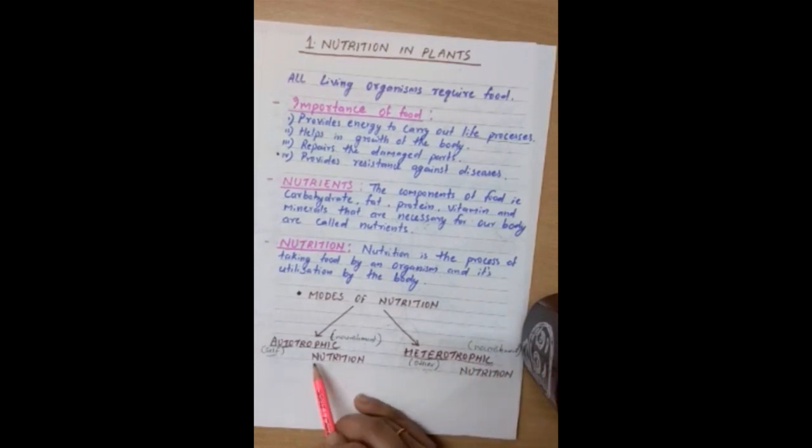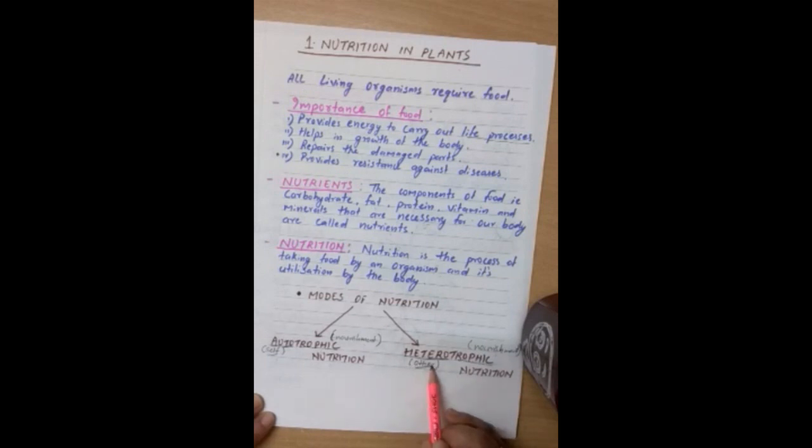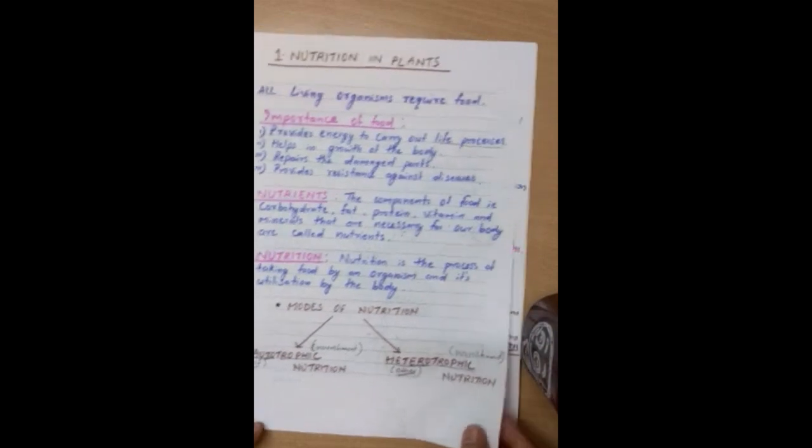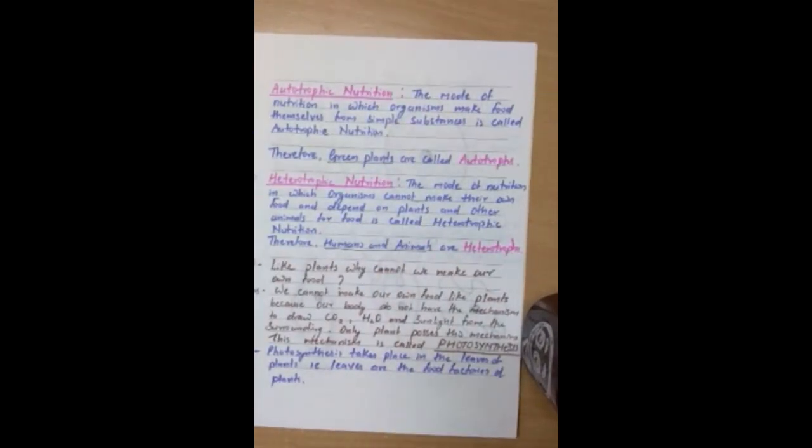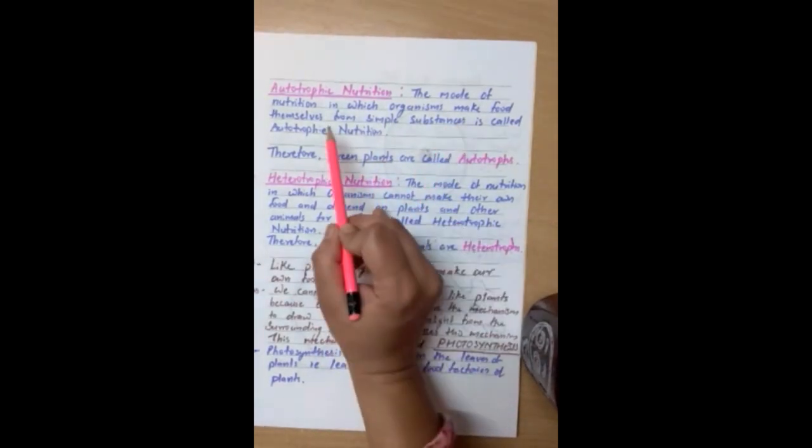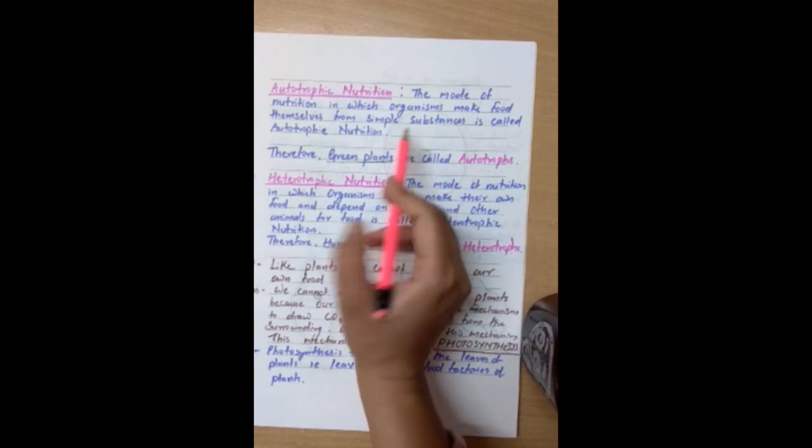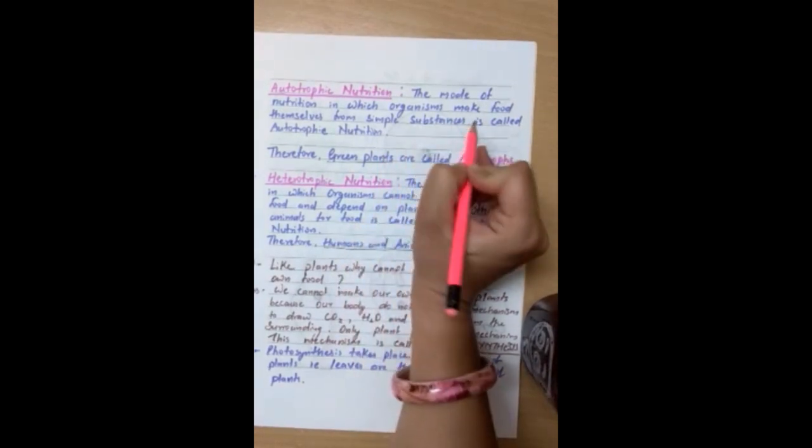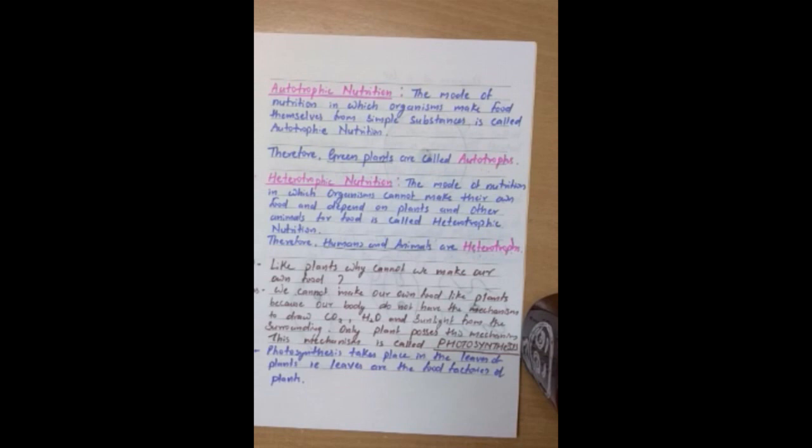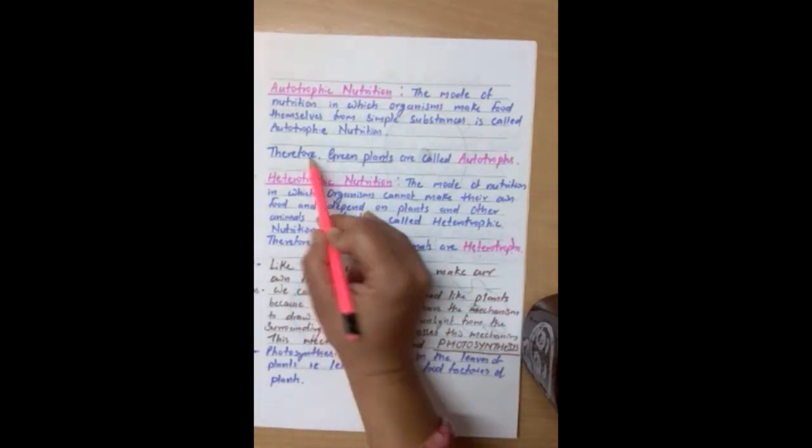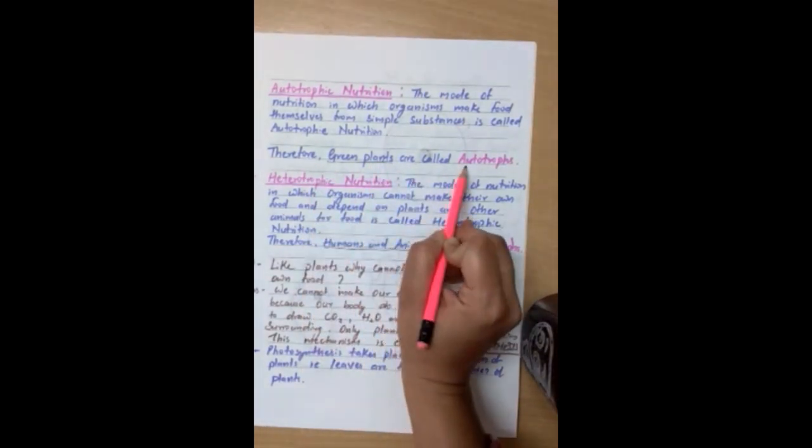That means in autotrophic nutrition, the organism is preparing its food by itself. Whereas in heterotrophic nutrition, the organism has to depend on other for its food. So, let's define autotrophic mode of nutrition. The mode of nutrition in which organisms make food themselves from simple substances is called autotrophic nutrition. Therefore, green plants are called autotrophs.